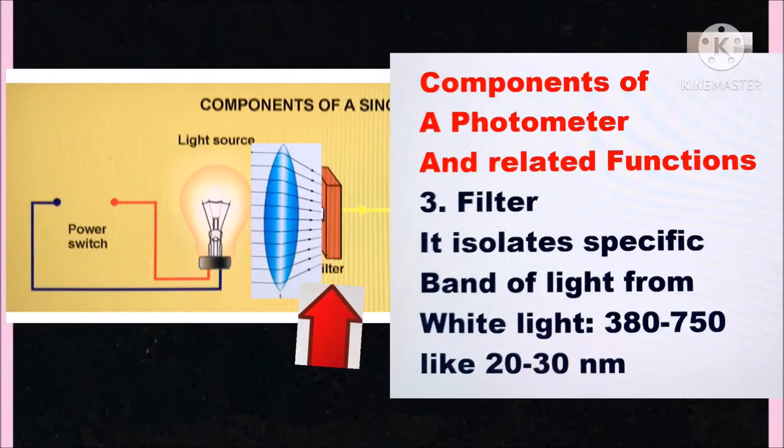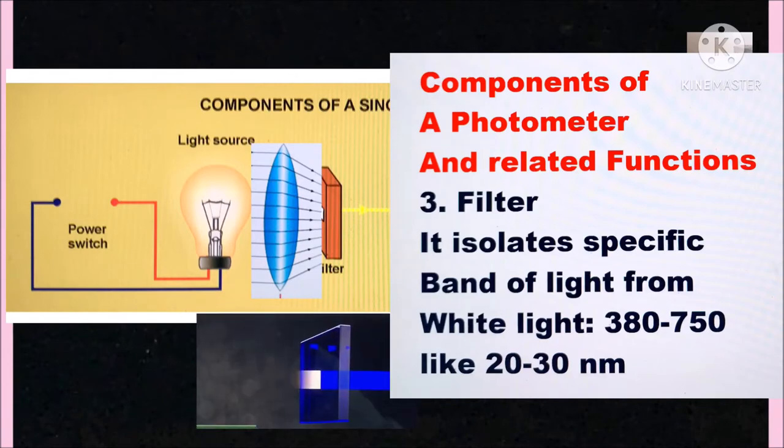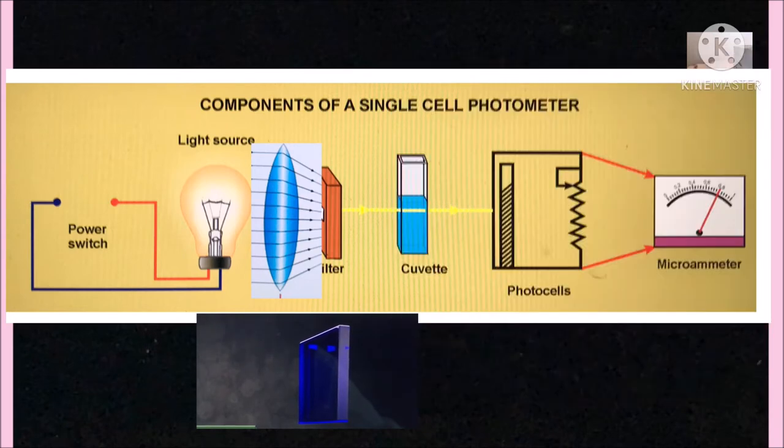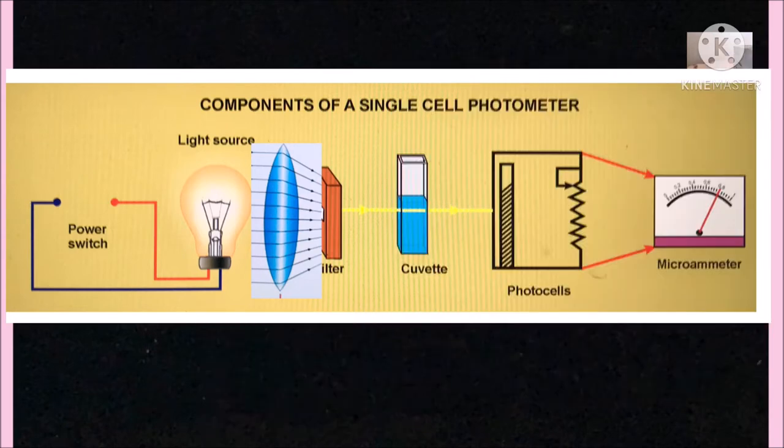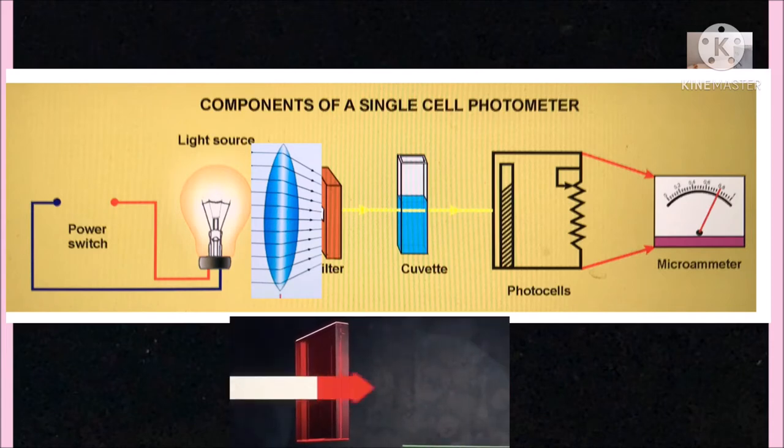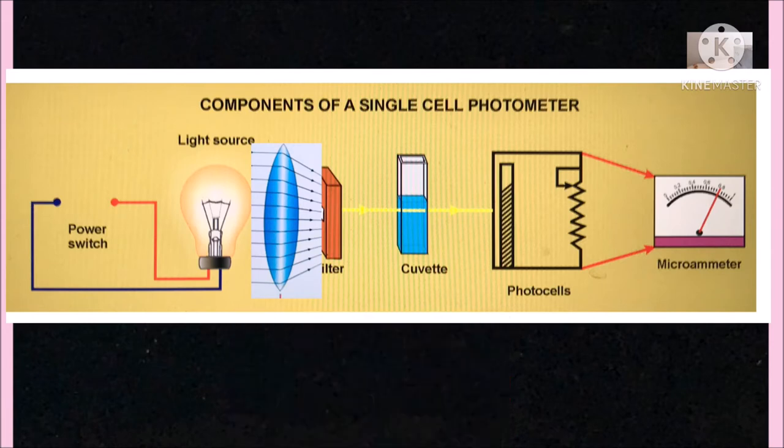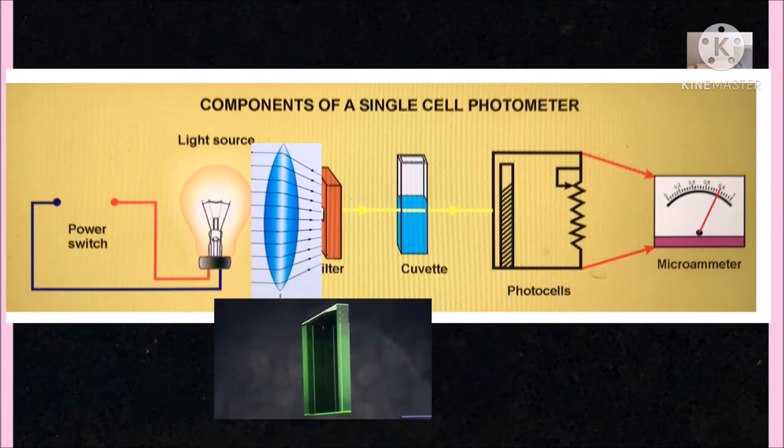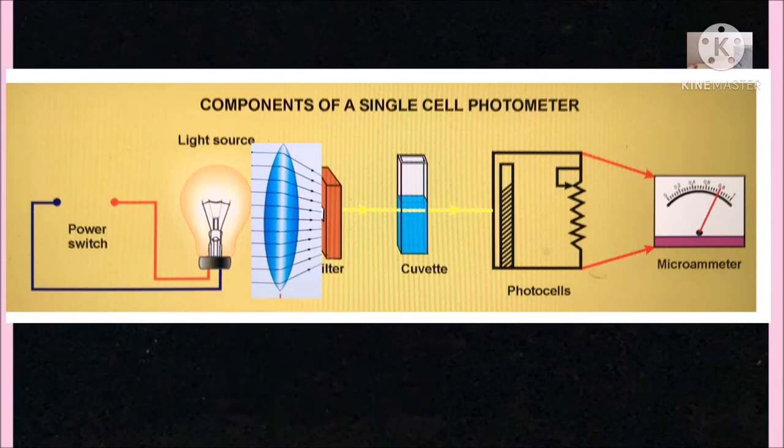Component 3: filter or monochromator. As we have seen earlier, filter will isolate a specific light wave band and it will pass through a color solution. Like through red filter, wave band of 620 to 660 nanometer will transmit, and through green filter, wave band of 510 to 540 will transmit.